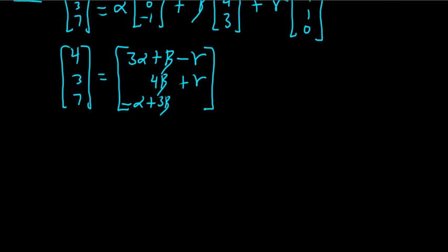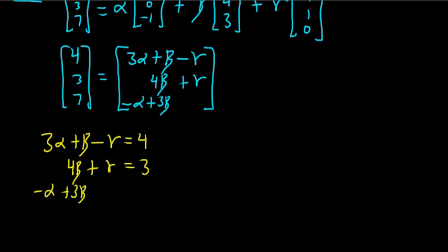We have a vector equation, that means the components must be equal. Two vectors are equal when the components are equal. So 3 alpha plus beta minus gamma equals 4. Then we have 4 beta plus gamma equals 3. Then we have negative alpha plus 3 beta equals 7. So now we have to work through this. I'm thinking first we can get rid of the alphas. Let's multiply the third equation by 3 and add it to the first equation.